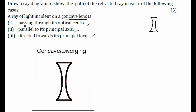Case one: a ray of light passing through the optical center. The optical center is nothing but the pole — point P in the diagram. When a light ray passes through the pole, after refraction there won't be any deviation. It will go undeviated in a straight line path. So a light ray incident at the pole will go undeviated.